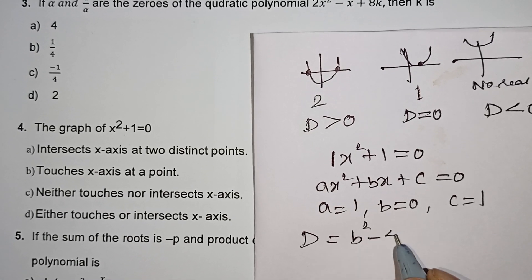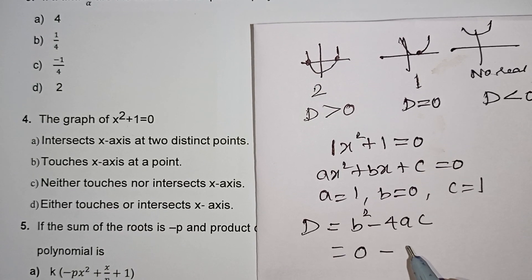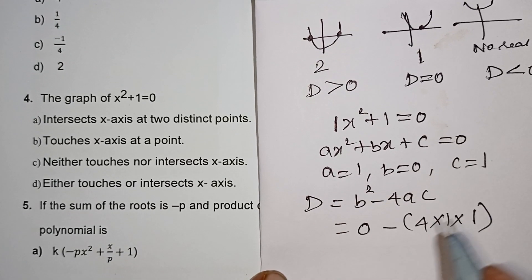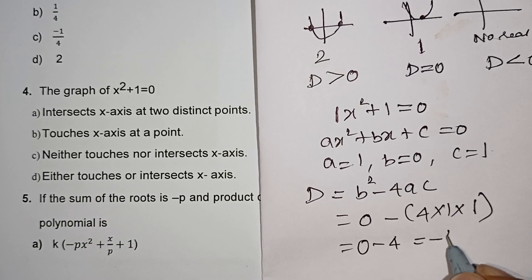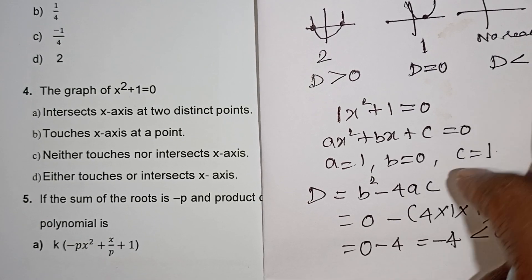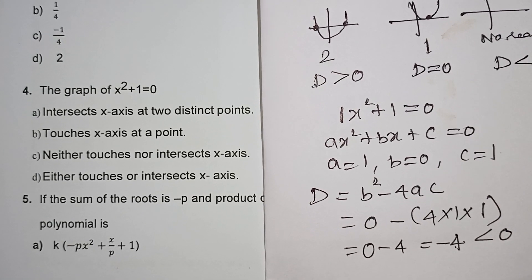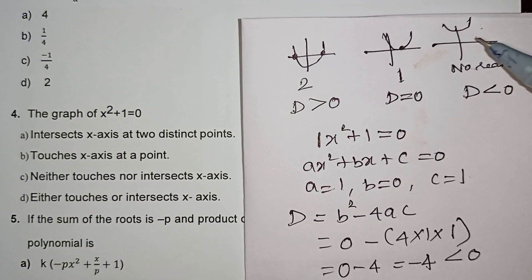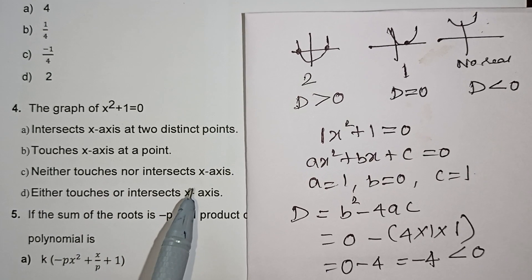Applying the formula: b squared minus 4ac. B is 0, so 0 squared is 0. Then 4 into a into c: a equals 1, c equals 1, so 4 times 1 times 1 equals 4. So discriminant equals 0 minus 4 equals minus 4. Since discriminant is less than 0, the answer is that the parabola neither touches nor intersects the x-axis.